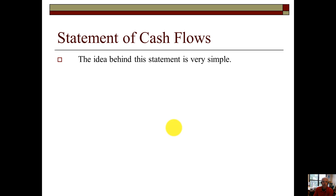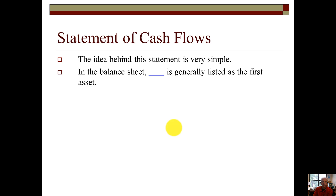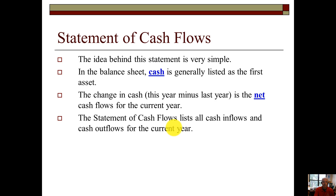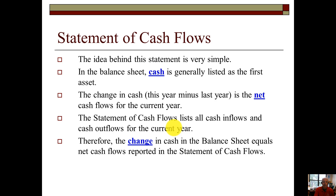The idea behind the statement of cash flows is very simple. In the balance sheet, cash is generally listed as the first asset. The change in cash — this year minus last year — is the net cash flows for the current year. The statement of cash flows lists all cash inflows and cash outflows for the current year. Therefore, the change in cash in the balance sheet equals the net cash flows reported in the statement of cash flows.